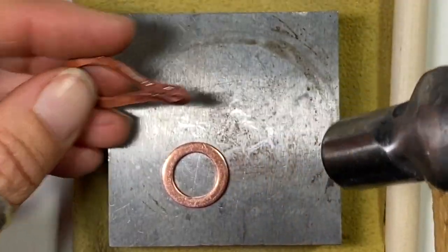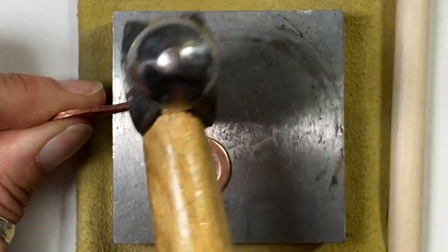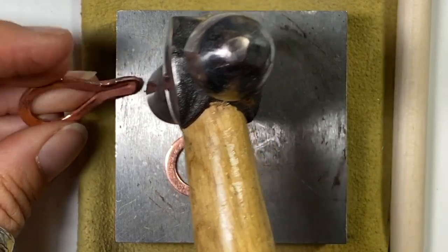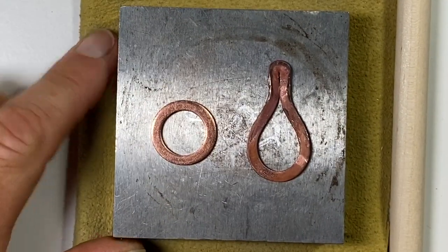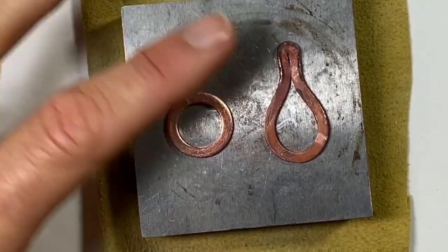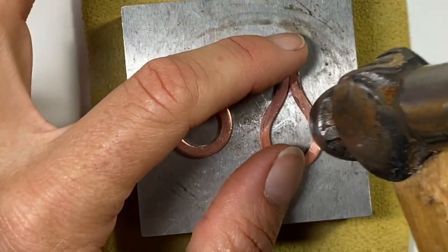Straighten out these edges - I can put it on the edge here, pound them together. Next, I want to put my hammer texture on, so I'll do it to both pieces on both sides using the rounded end of my hammer here.